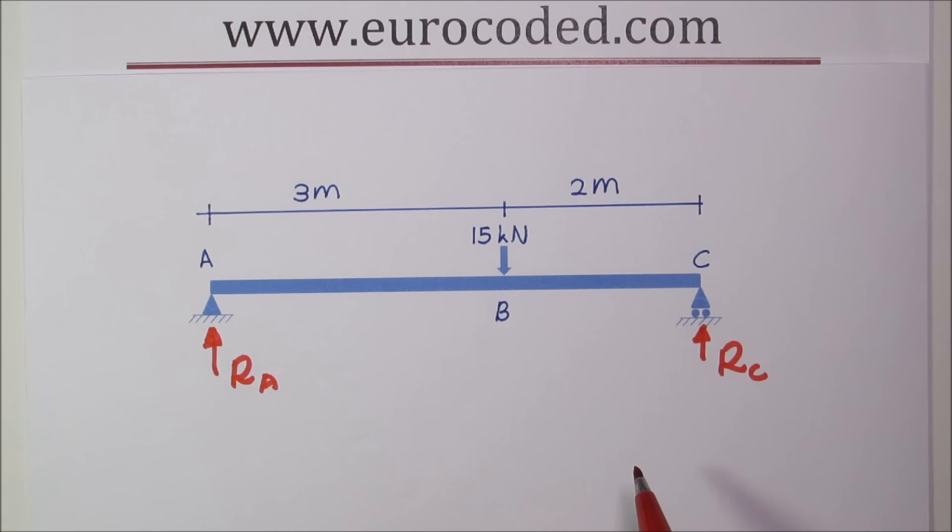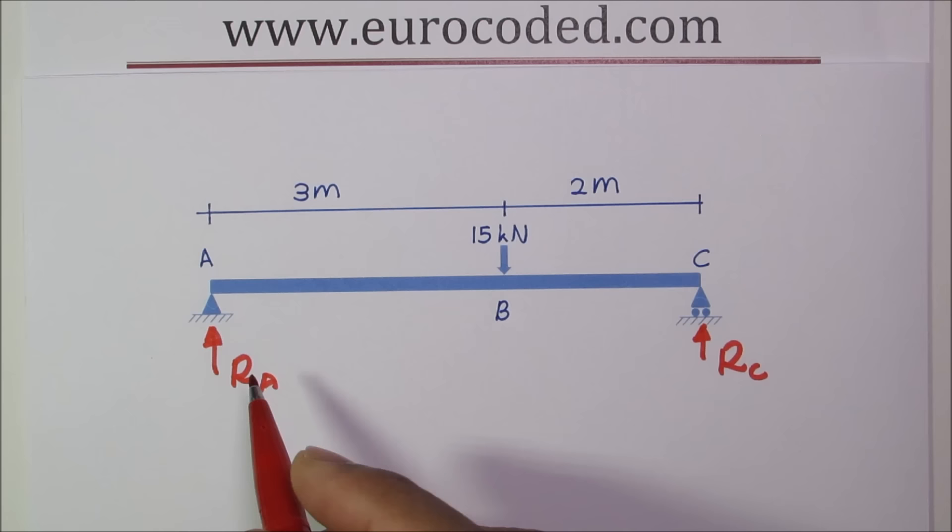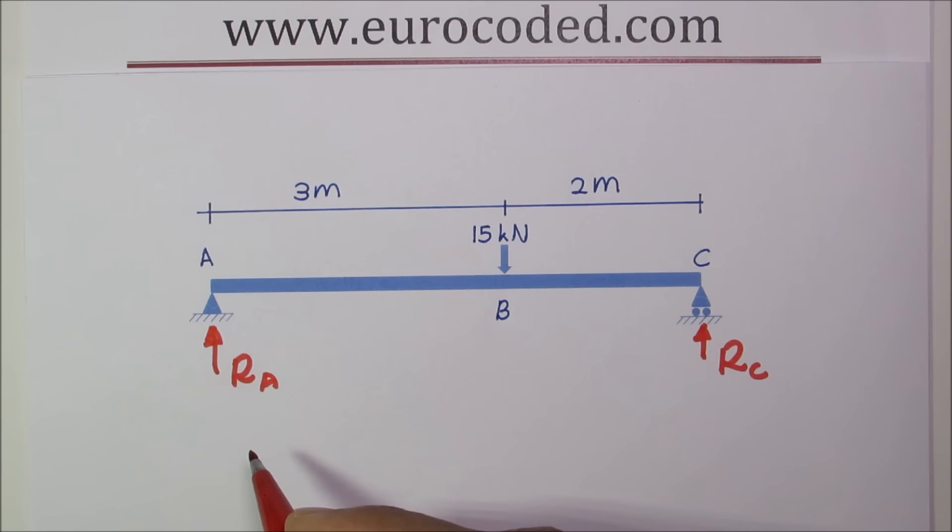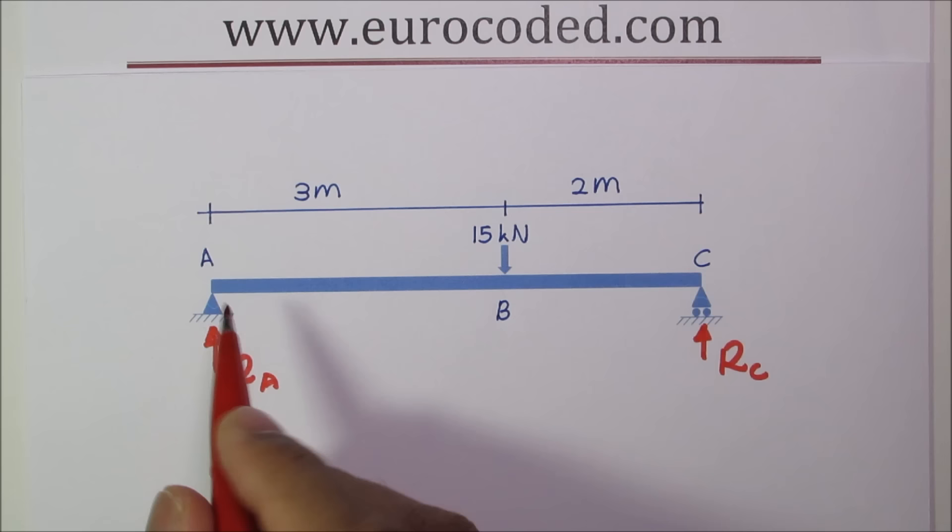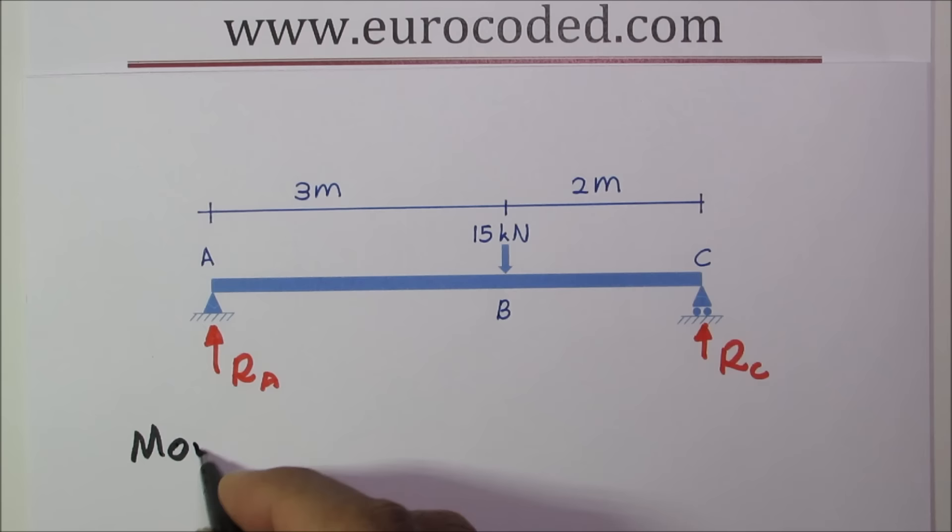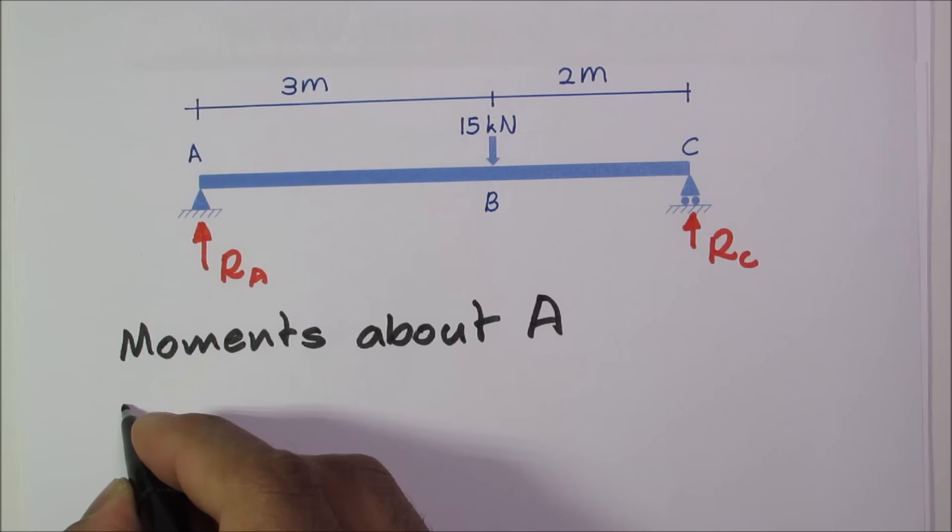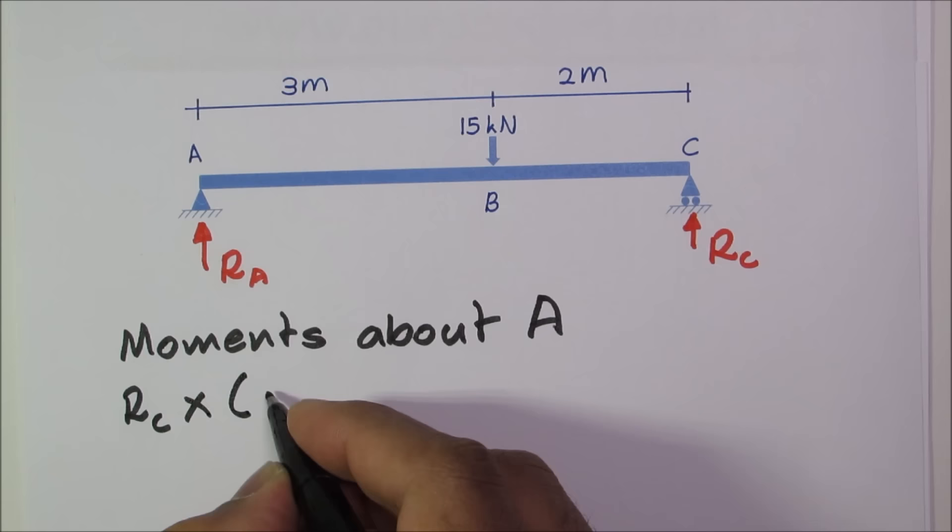What I'm going to do is take moments about A. You can see that the lever arm is 0 for reaction RA when you are taking moments about A. Hence RA has 0 moment about A. We have an anti-clockwise moment due to RC reaction and the lever arm is 5 meters, from A to C. So we can write moments about A, RC times 3 plus 2.